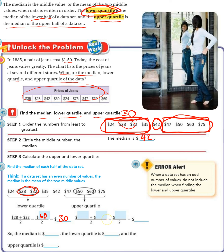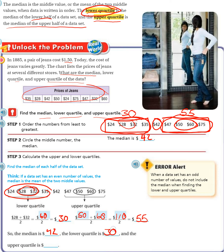For the upper quartile, the two numbers in the middle are 50 and 60. Add those together to get 110, divided by 2 is $55. So the upper quartile is $55. To summarize: the median is $42, the lower quartile is $30, and the upper quartile is $55.